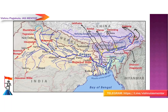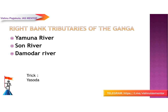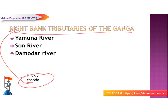Next, the right bank tributaries of Ganga are Yamuna, Son, and Damodar. Among these, the Yamuna river is the largest and most important tributary, and it has its own tributaries as well. The trick to remember the right bank tributaries is the name 'Yasoda' — Ya for Yamuna, So for Son, Da for Damodar.